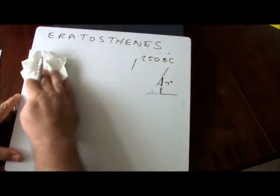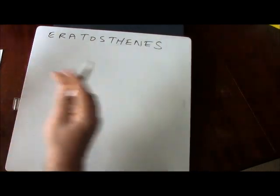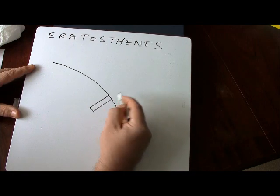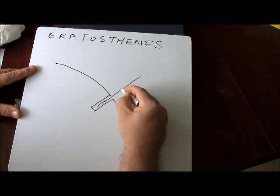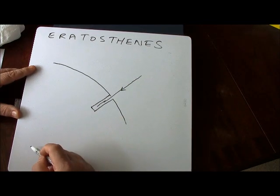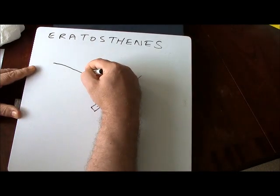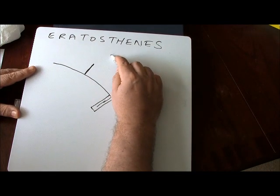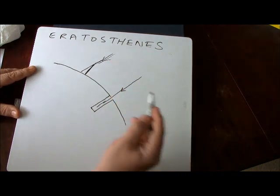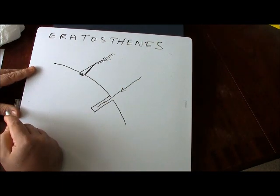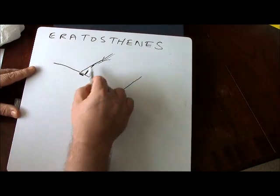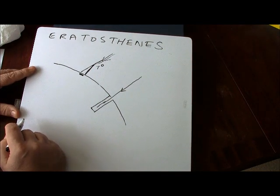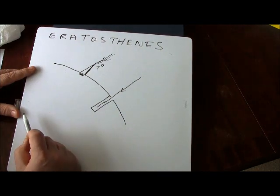Eratosthenes figured out that the answer was that the surface of the earth is curved. Imagine this is the surface of the earth — here is our well in Syene and the Sun's rays are coming straight down. At Alexandria, a vertical stick at the same time would cast a shadow because the Sun isn't directly overhead. With a bit of trigonometry we can work out that shadow corresponds to an angle of seven degrees.